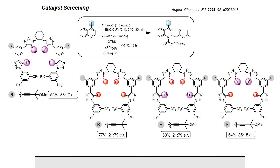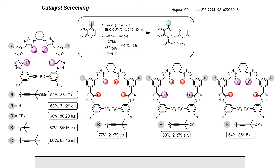Based on the tetra-iodo catalyst, we screened also different rest groups and could increase the enantiomeric ratio up to 85 to 15 with the acetylene tertiary butyl group. And since we were focused on pure halogen bonding, we selected this catalyst as the catalyst of choice.